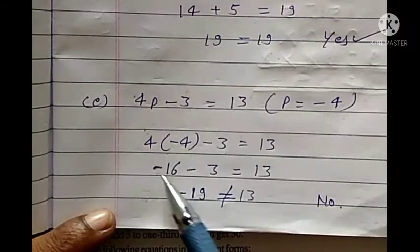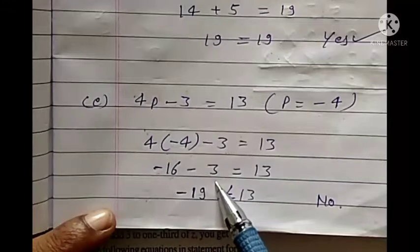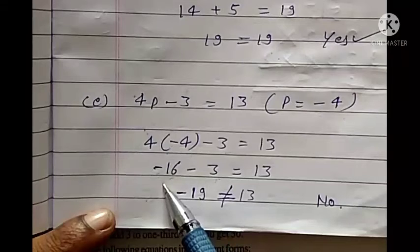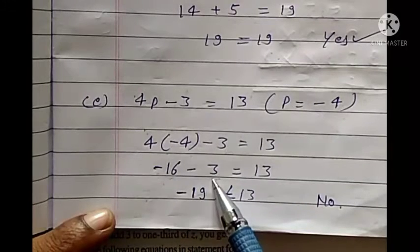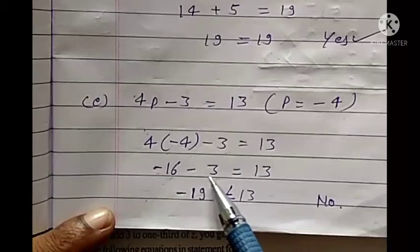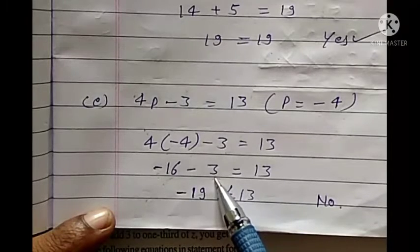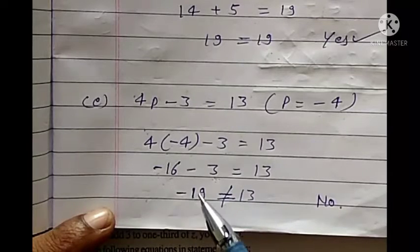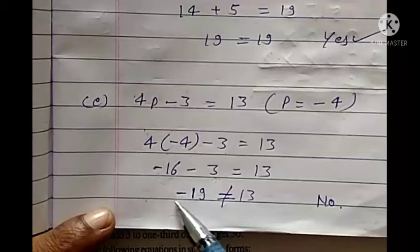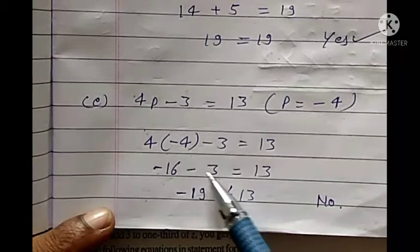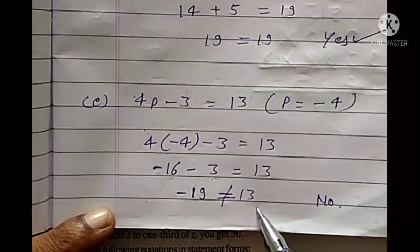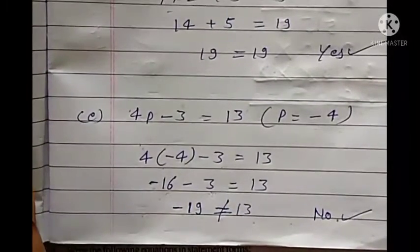So minus 16 minus 3 gives minus 19, which is not equal to 13. So here the answer is No. This is how you will find yes or no to check whether a value satisfies the equation.